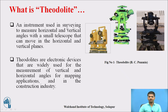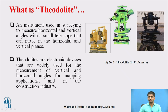What do you mean by theodolite? Basically, it is an instrument used in surveying to measure horizontal and vertical angles with a small telescope that can move in the horizontal and vertical planes. Observing this picture, it moves in a horizontal direction and a vertical direction, so you can easily identify the vertical and horizontal angles.